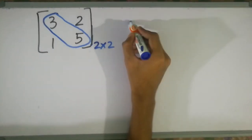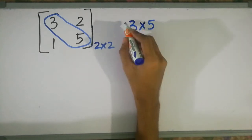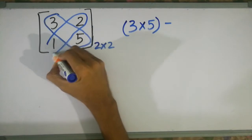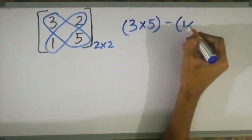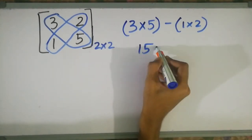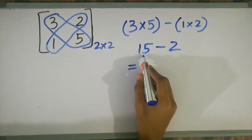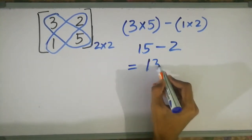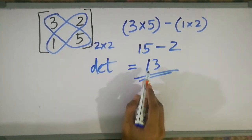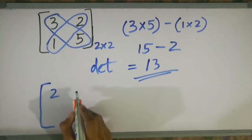So, this is 3,5 and we will multiply. 3,5 minus 1,2. So 3×5 = 15, minus 1×2 = 2. So 15 - 2 = 13. In this matrix, the determinant is 13.